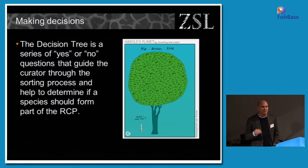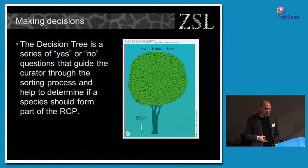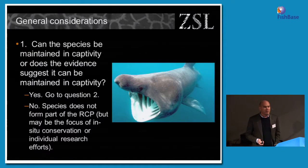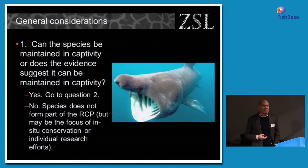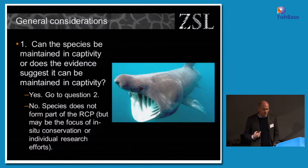So decision trees — making decisions. Every day a curator or collection manager has to make decisions about which species they keep in their collection, and the decision tree for the regional collection plan helps them do that. It's a series of yes-or-no questions that guide the curator through the sorting process and help them determine which species should form part of the RCP. Initially there are some general considerations. The most important is whether or not the species can be maintained in captivity, or whether there's enough evidence to suggest it can. Basking sharks, for example — not so much. If the answer is yes, we go to question two; if no, that species is not on the RCP. However, we could use it as a focus for a campaign, awareness raising, or in situ research.